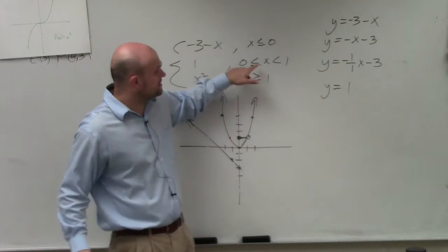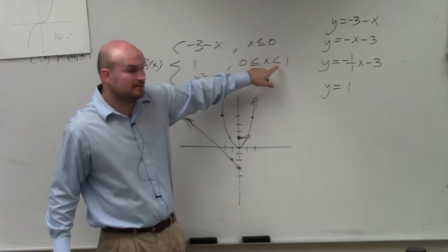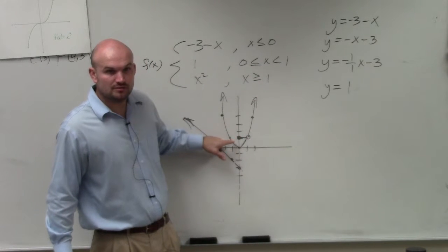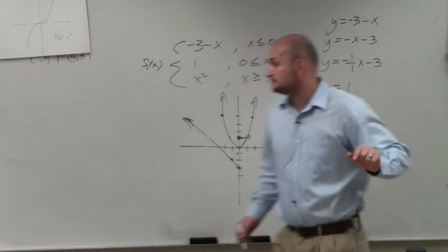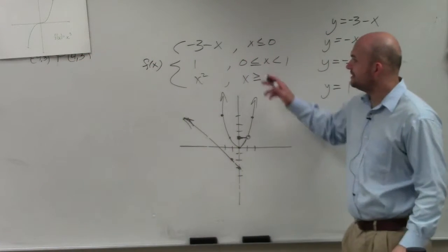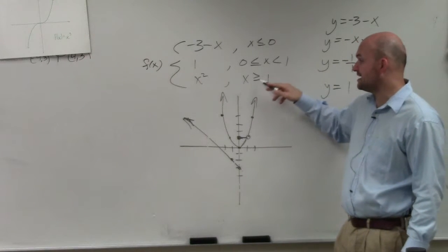And then also note that that is an open circle now. Do you guys see the difference of equal to 0 and not equal to 1? So open circle, close circle, or open point, close point. Do you understand? OK?